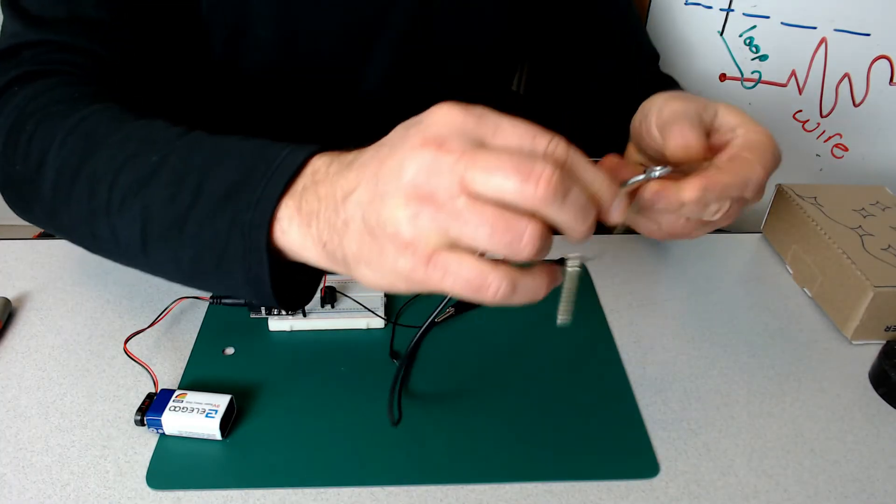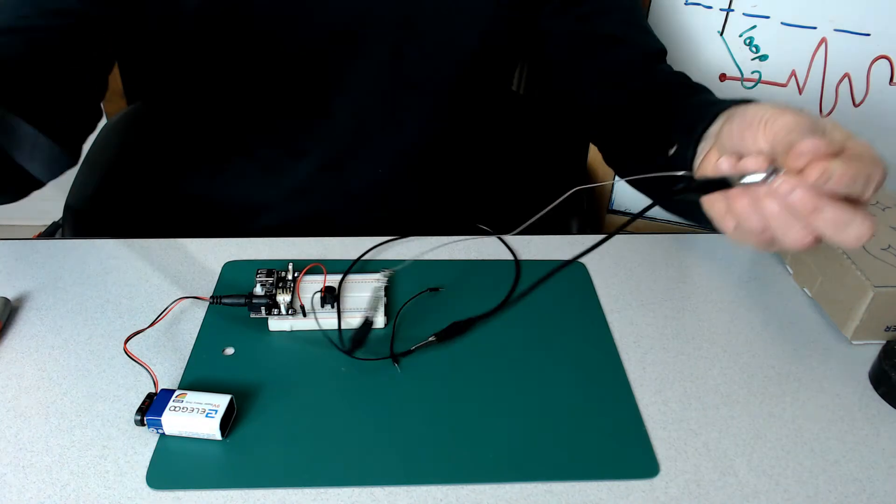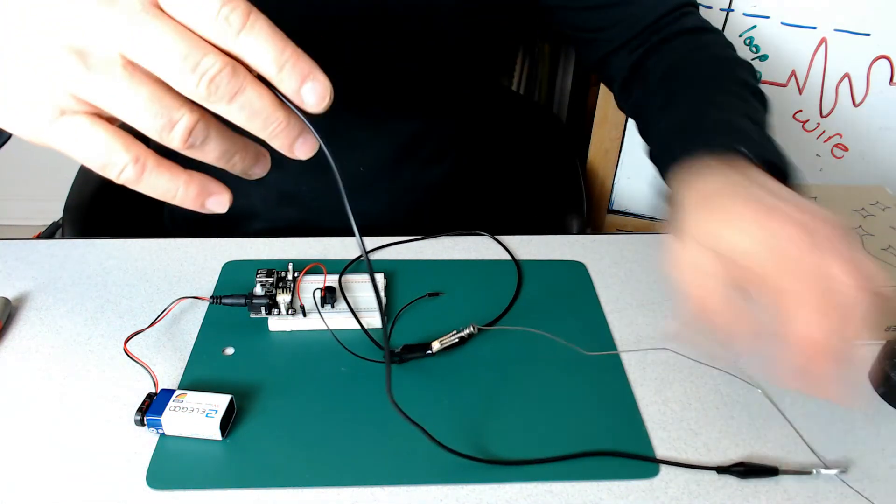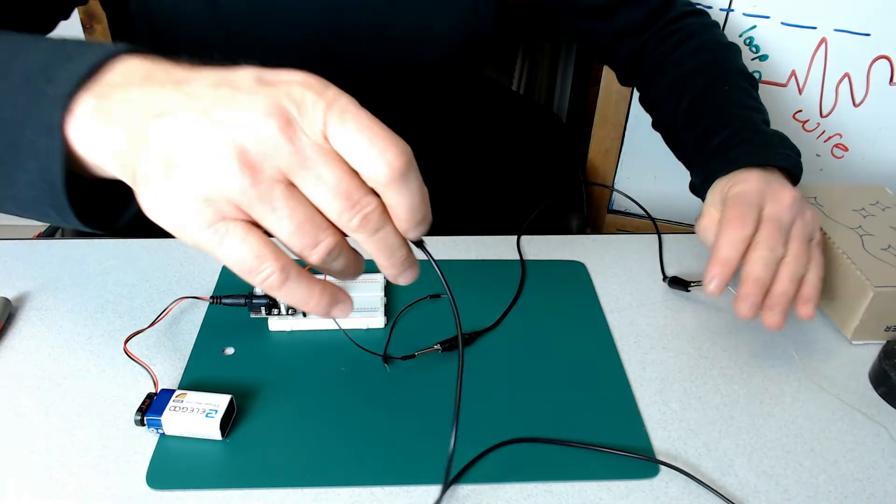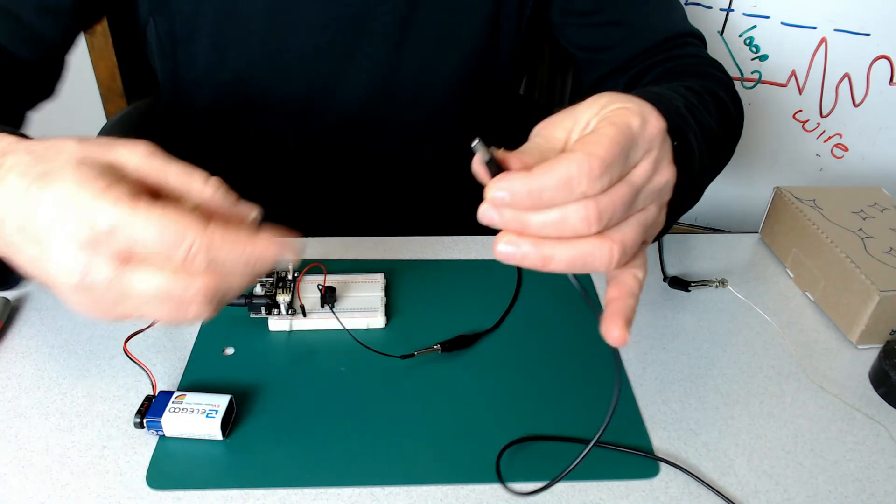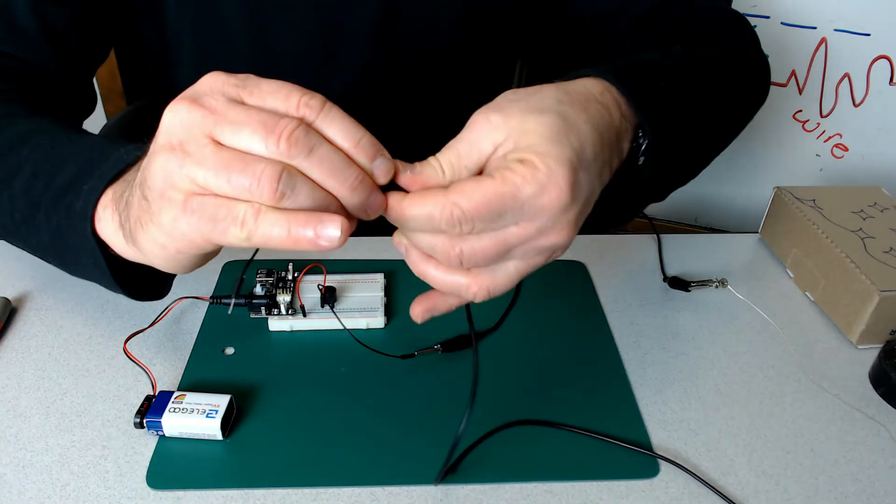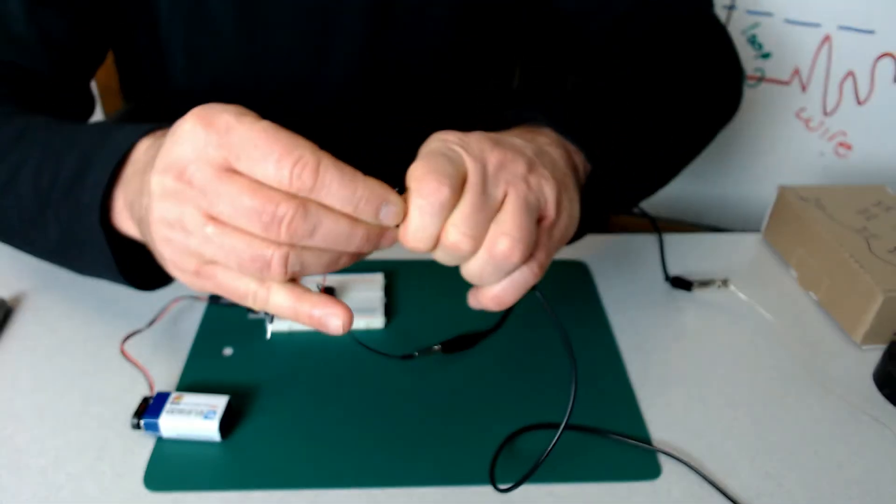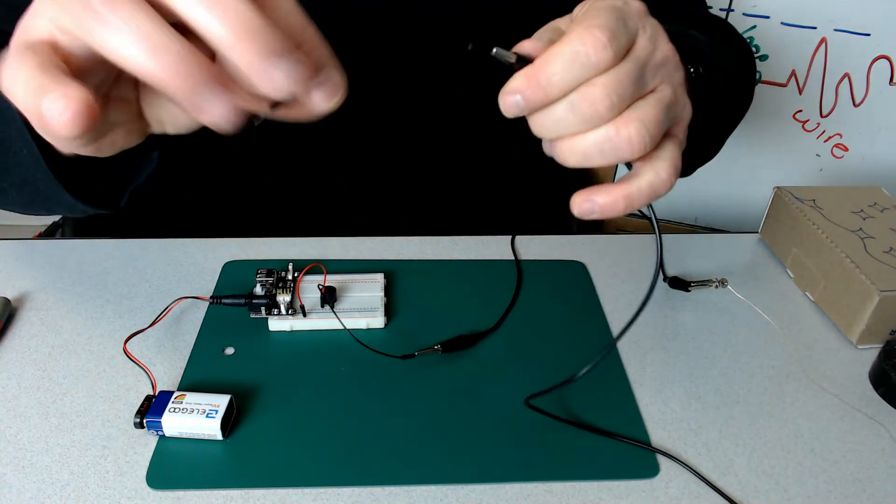Notice that one end of the flexible wire remains unconnected. We'll take the other end of the alligator wire and connect it to another connection wire and insert it into the negative line of the breadboard.